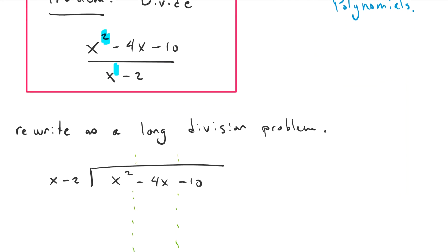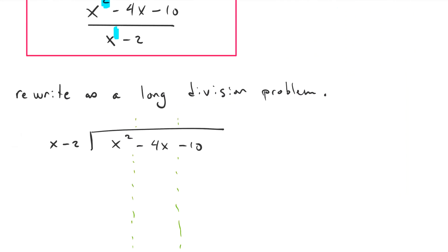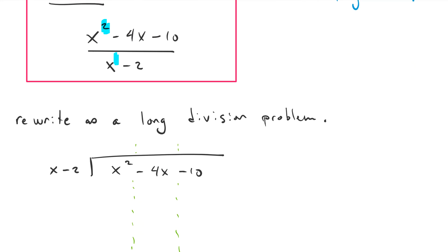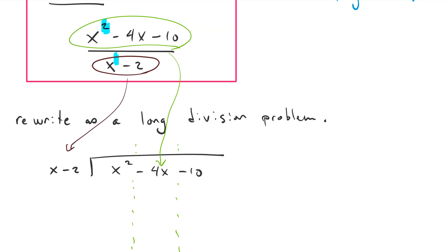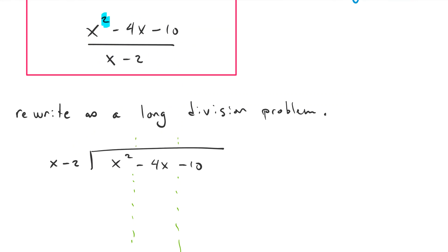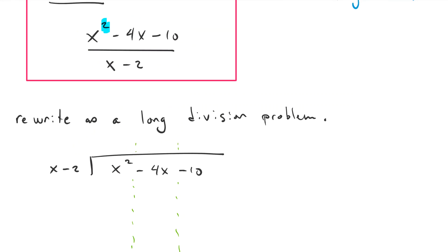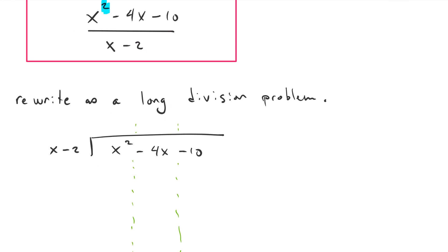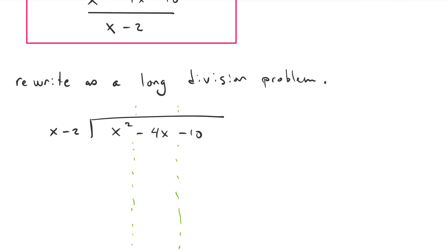So we rewrite it as a long division problem by taking the denominator and putting it out in front, and taking the numerator and putting it underneath the division symbol. You don't necessarily have to have these green division symbol dividers here that I have. I just put them there because they are actually helpful for me to keep my terms straight.